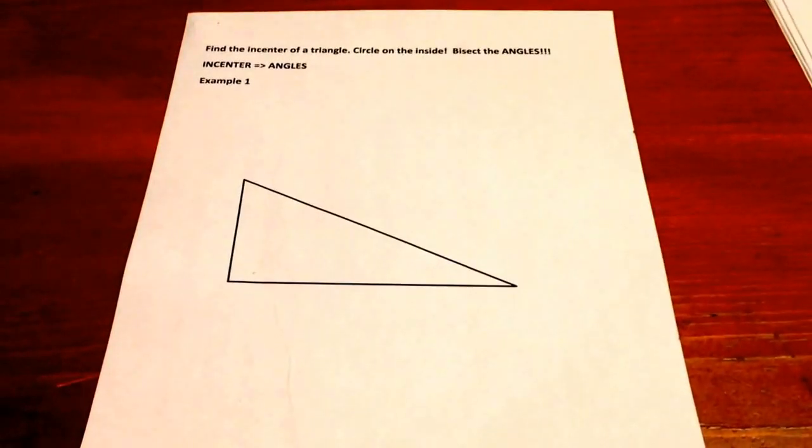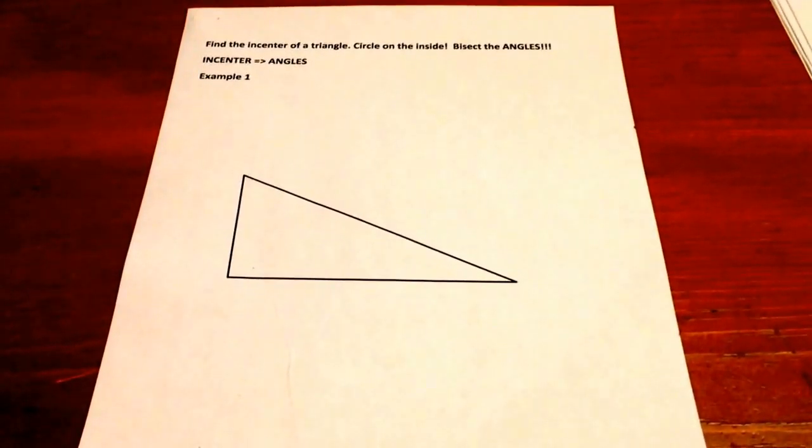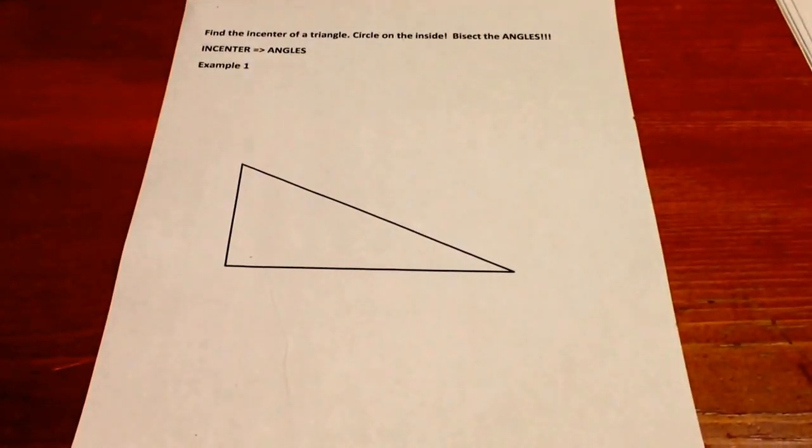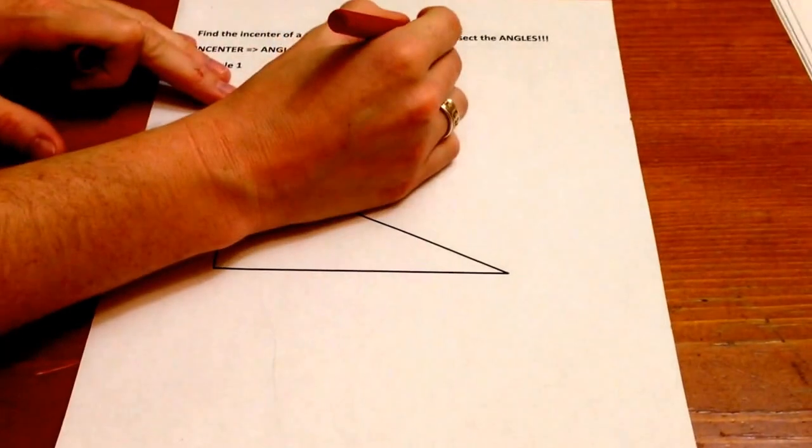Okay, this next skill is to find the incenter of a triangle. This is a circle on the inside of this triangle.